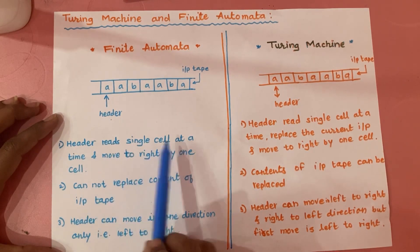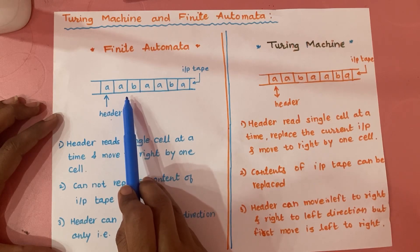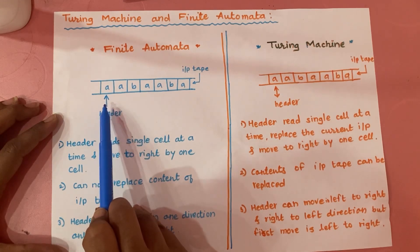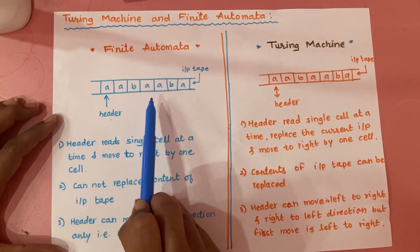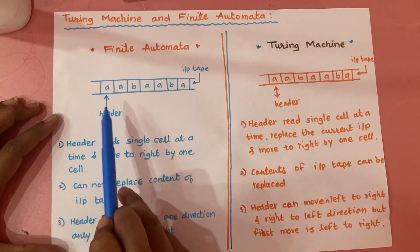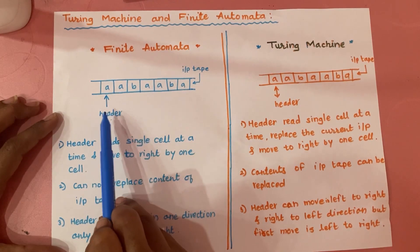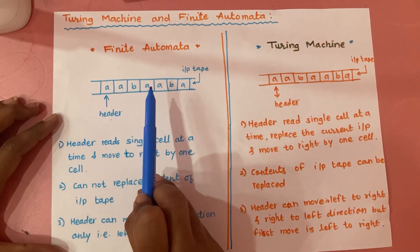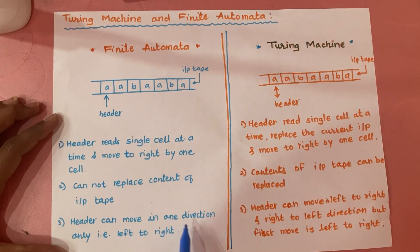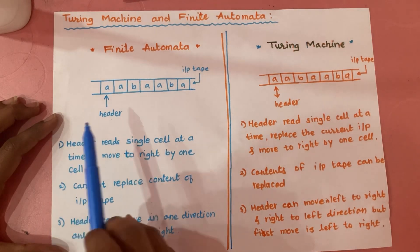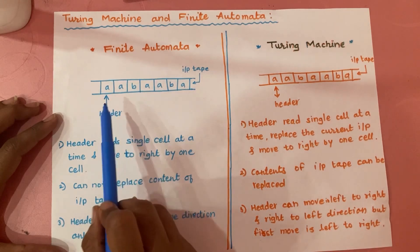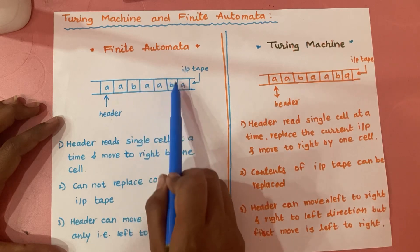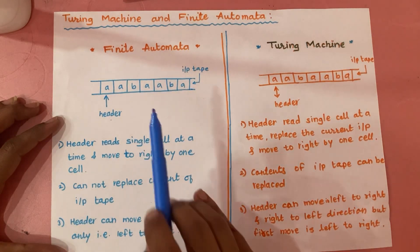The header reads a single cell at a time and moves to the right by one cell. In case of FA, the header can move in only one direction — that is from left to right only. Also, in case of FA we cannot replace or override the content present on the input tape.